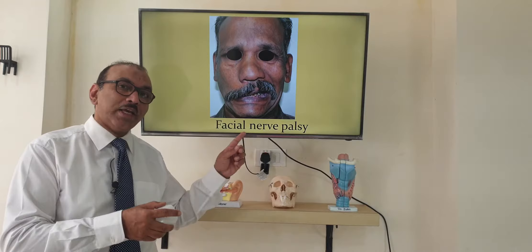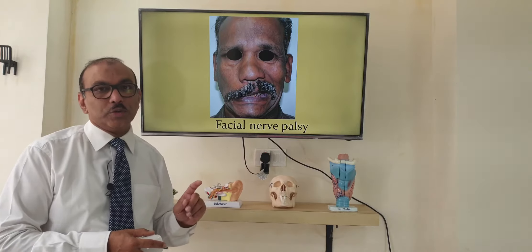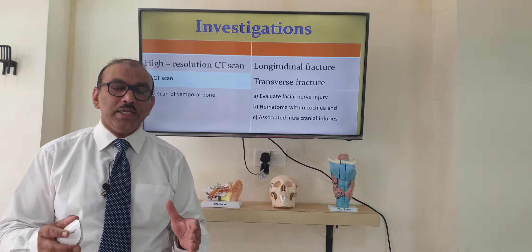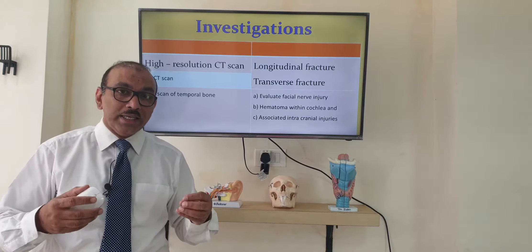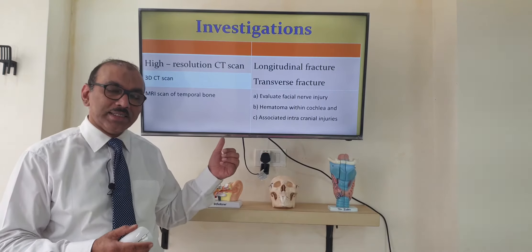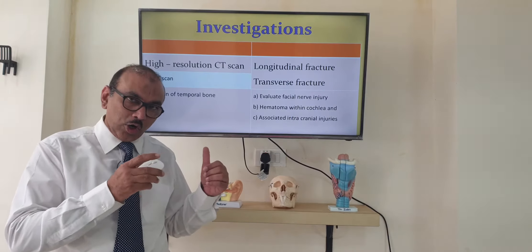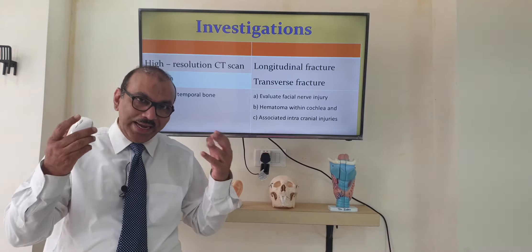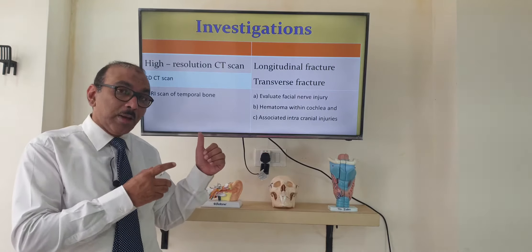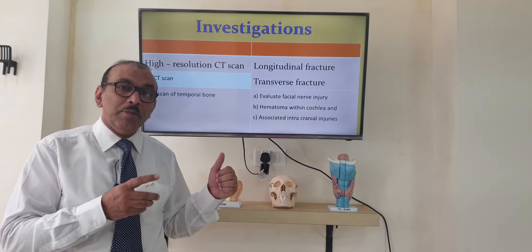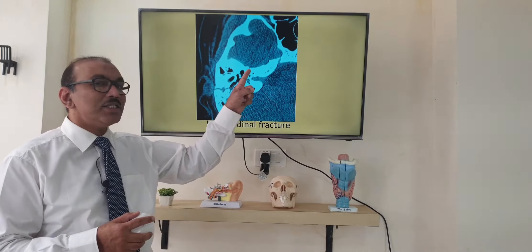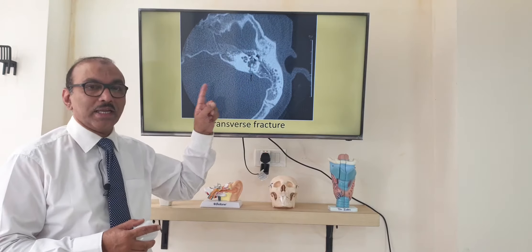On examination we can also make out facial nerve palsy. Coming to investigations — the patient is admitted already and all the initial treatment has already been started because it's an accident case. When the CT scan is done of the temporal bone — and of course it won't be just temporal bone, it will be head and neck and maybe other parts — it will be reported as longitudinal fracture or transverse fracture, as I have shown in the previous diagram.